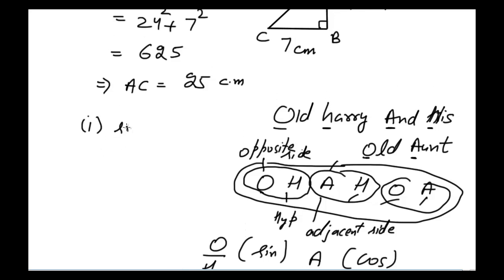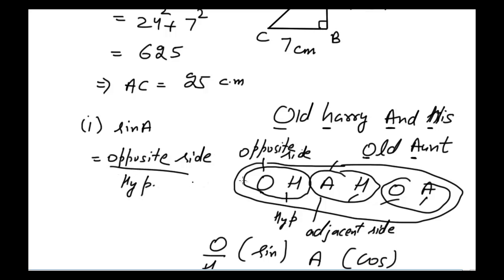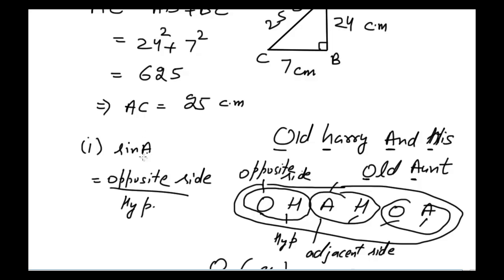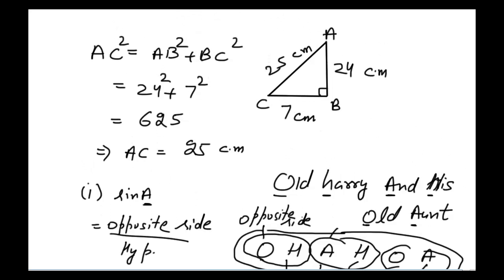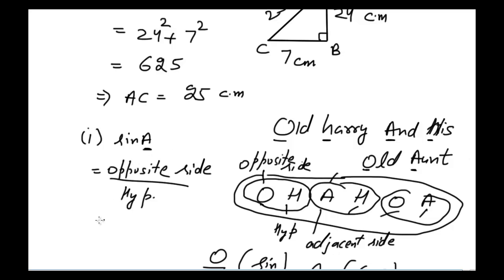Now let's find sin A. The formula for sine is opposite side divided by hypotenuse. The opposite side to angle A is BC, and the hypotenuse is AC. So sin A = BC / AC = 7 / 25.